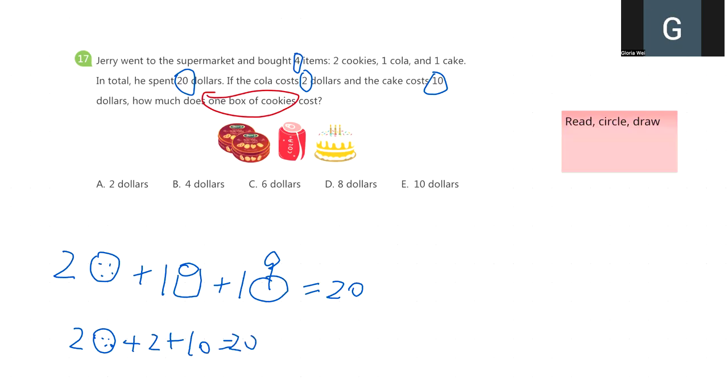What can we know from this equation? We can find the sum of 2 boxes of cookies, right? We do minus here: 20 minus 2 minus 10.